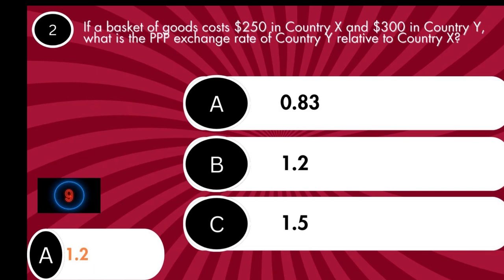If we were interested in the PPP exchange rate of X relative to Y, then it would have been the reverse of what we initially calculated, which in this case would be $250 divided by $300, and this will equal 0.83.